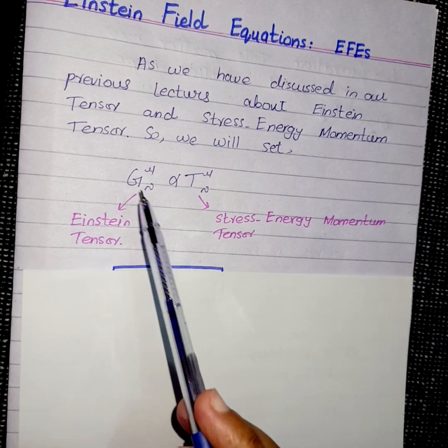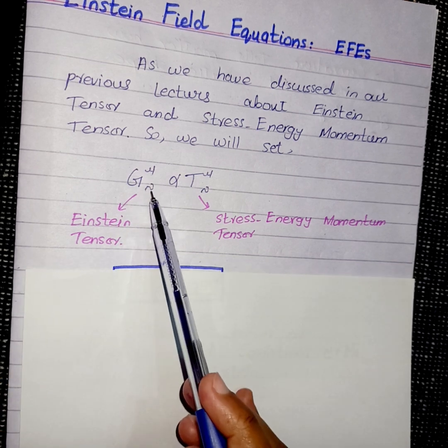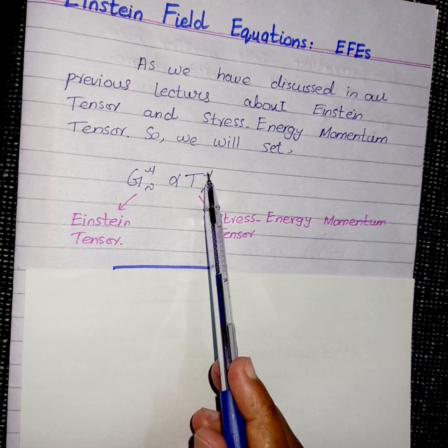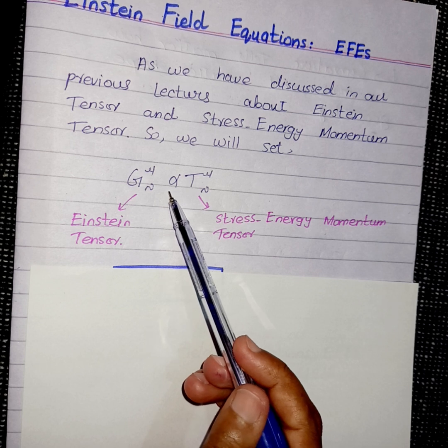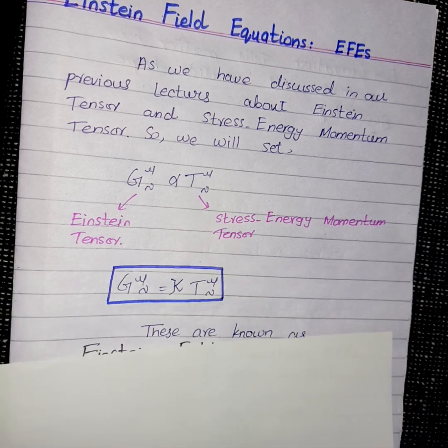If we set G_μν, the Einstein tensor, directly related to stress energy momentum tensor, then to remove this proportionality sign, we will add a new constant.